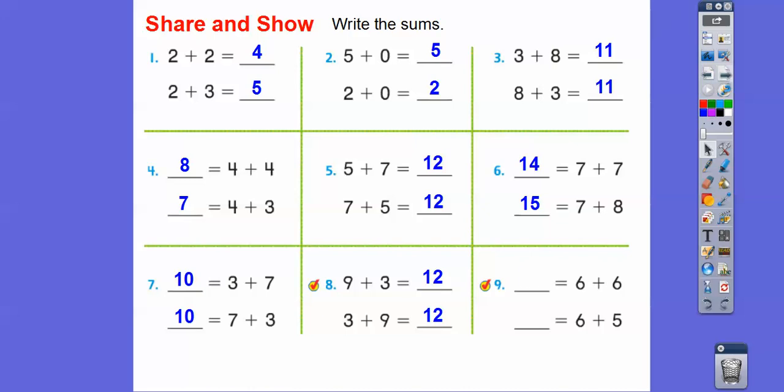6 + 6 is 12. Remember, counting doubles from the last lesson. 6 + 5 is going to be one less than 6 + 6, so it's going to be 11 right there.